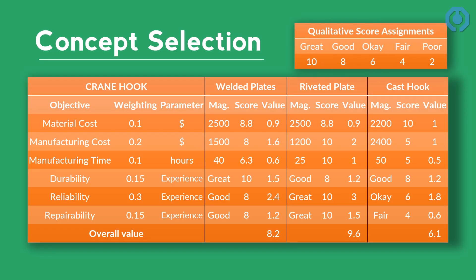For example, consider a crane hook. The designer found three ideas: welding plates together, riveting plates together, and casting. Here you can see the concept selection table for each idea and the score assignments for the qualitative objectives. In this way, we can use logic to rationalize qualitative parameters.